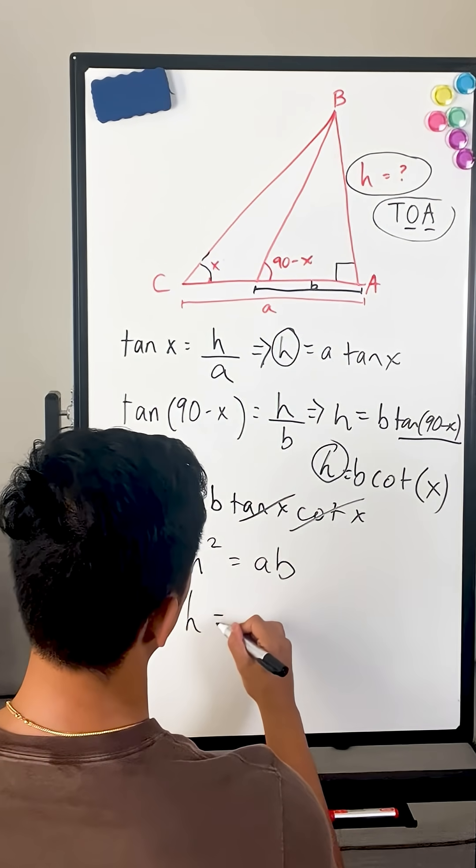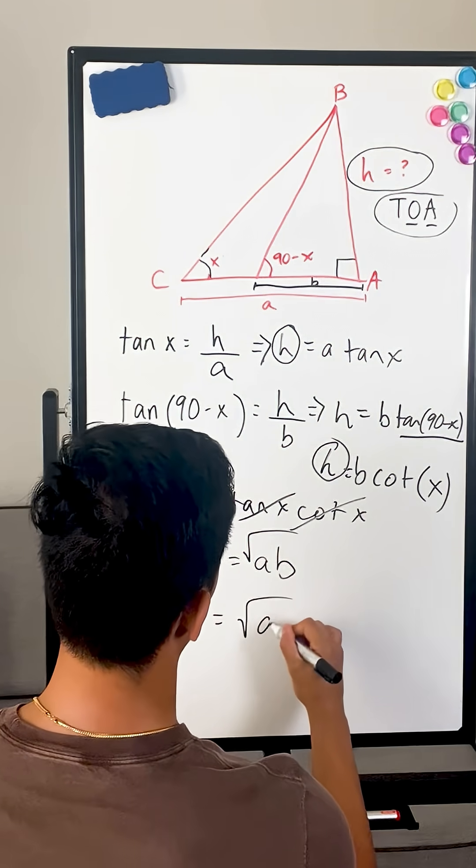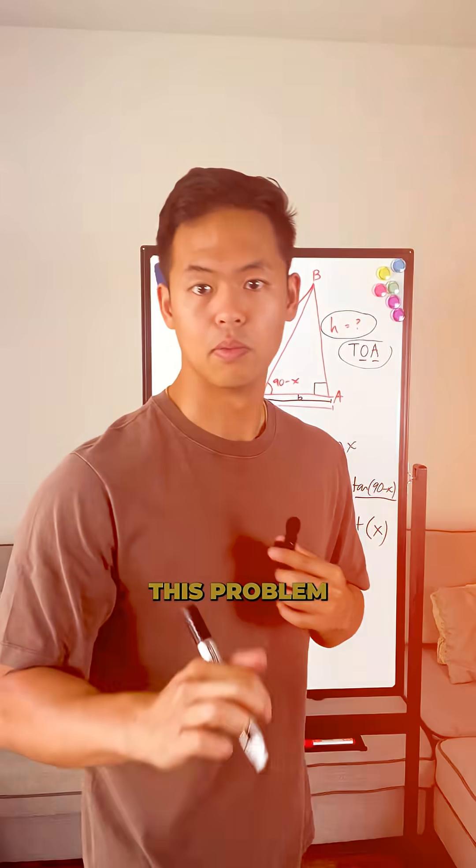Now all we need to do is take the square root of both sides, and we know that H is going to equal the square root of AB. And that is how you solve this problem.